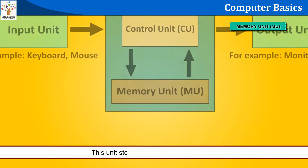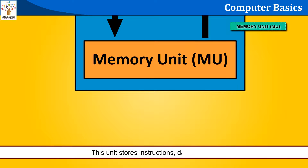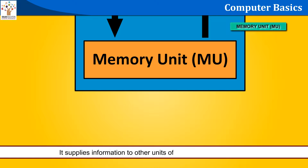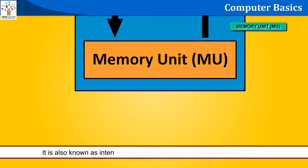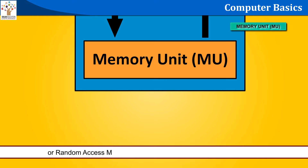Memory Unit: This unit stores instructions, data, and results. It supplies information to other units of the computer when needed. It is also known as internal storage unit, the main memory, the primary storage, or Random Access Memory (RAM). It comes in the form of a memory chip.